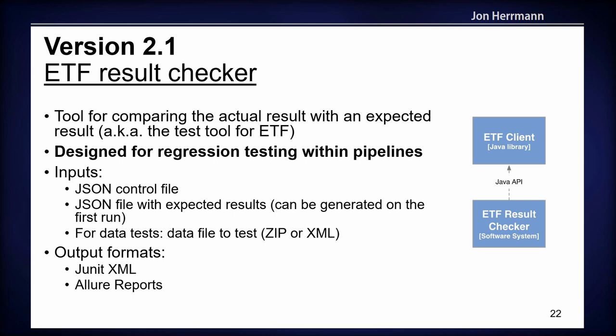For version 2.1, we also added the ETF result checker to the ecosystem. It is a tool for comparing the actual result with an expected result, designed to be used in a pipeline for regression testing. You add a JSON control file specifying which executable test suite to run, add a file with the expected result, upload the data automatically in the pipeline, and receive a result.